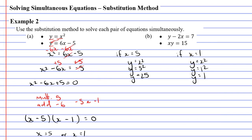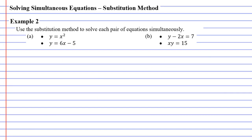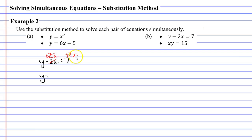Let's move on to question B. We need to solve these equations simultaneously using the substitution method. When using the substitution method, I need an equation that says y equals something or x equals something, and I don't have that right now, so I'll need to rearrange. Taking the first equation, y minus 2x equals 7, I'll add 2x to both sides to get y equals 2x plus 7. Now I can substitute 2x plus 7 in place of y in the second equation.